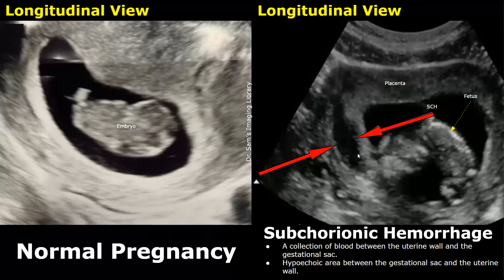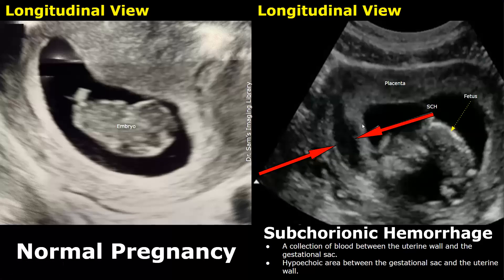You will see many cases of subchorionic hemorrhage which will help you in diagnosing such cases on ultrasound. We will be mainly focusing on the gestational sac appearance, so the gestational age of the embryo or fetus in both the images may not match.